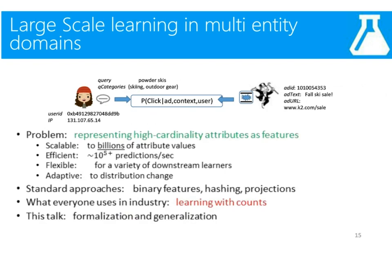The core problem for this type of domain is how do we represent all these high-cardinality attributes as features for the learning algorithm, since learners typically want features to come as numeric vectors. We can isolate four key requirements for a good representation. The representation must be scalable — it must be able to represent billions of values. It must be efficient, since we may be doing lots of predictions in real time. It also needs to be flexible, because we may choose a learner downstream that wants a low-dimensional vector, such as neural nets or tree ensembles. And finally, it needs to be adaptive, because in these domains there's a lot of change — users come and go, advertisers come and go, medallions get reissued, new locations and roads change.